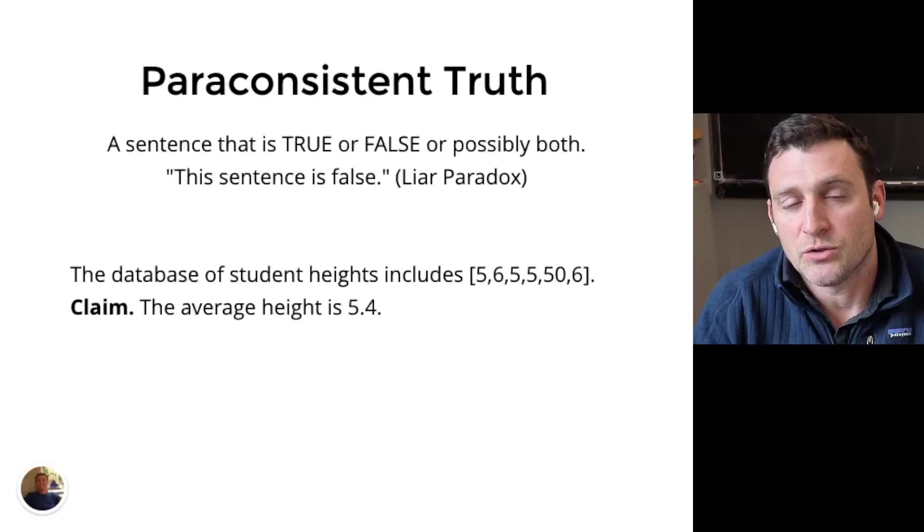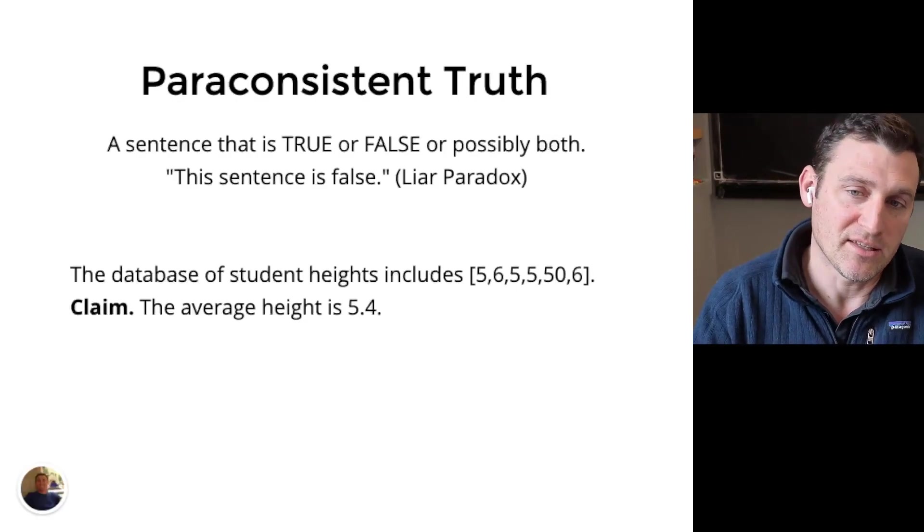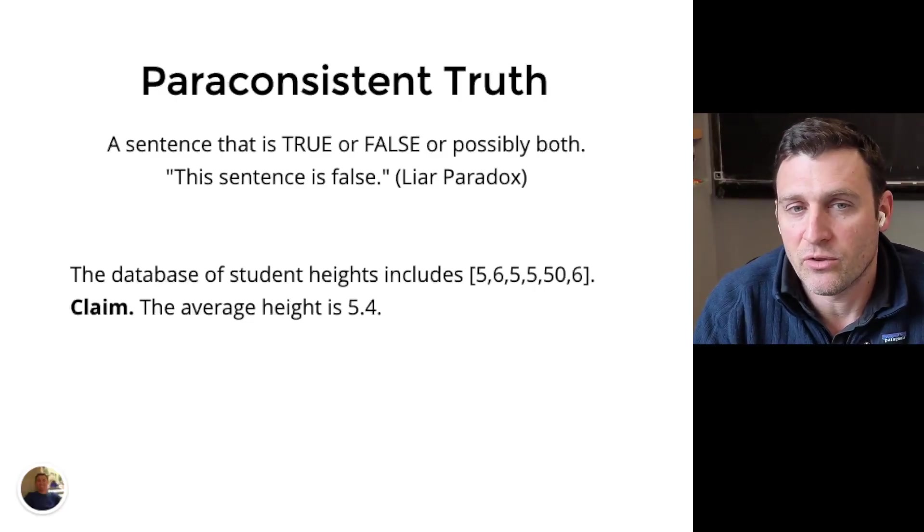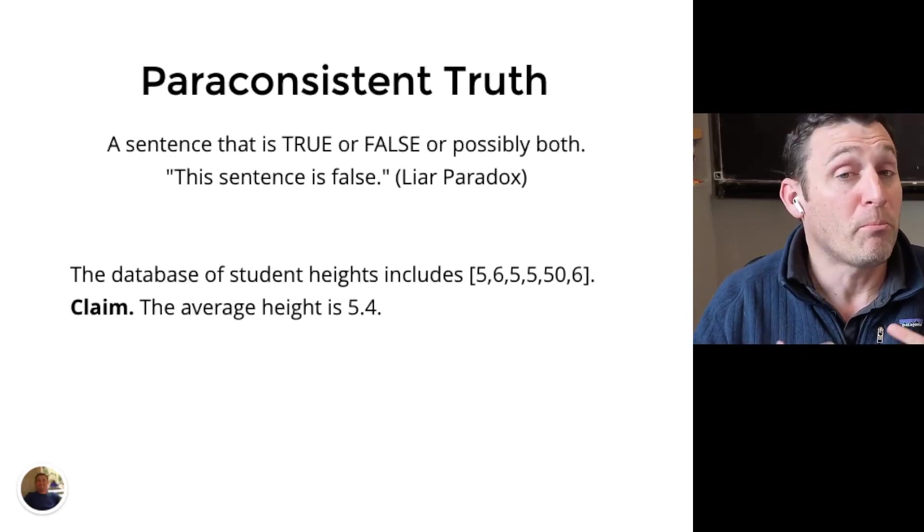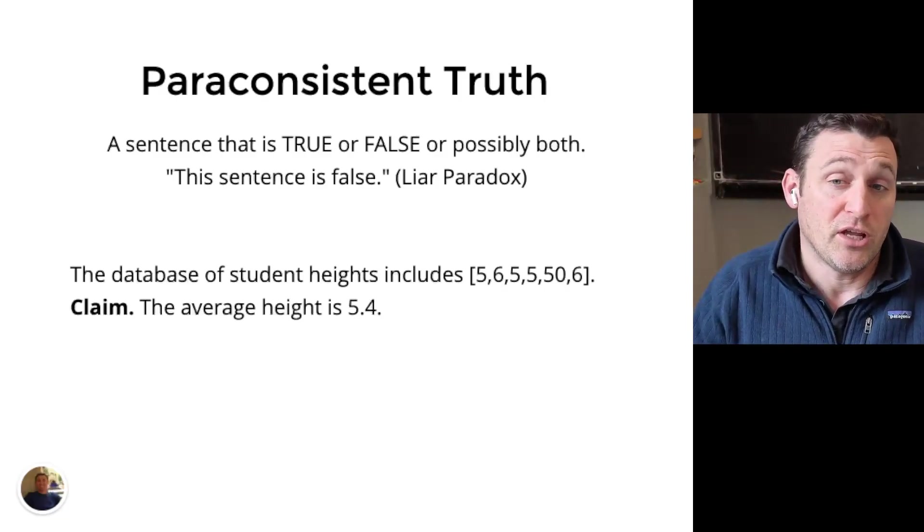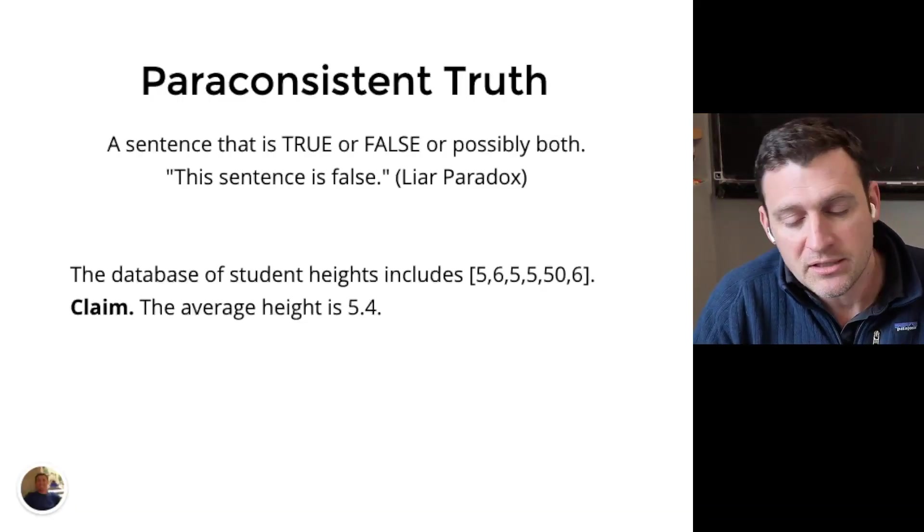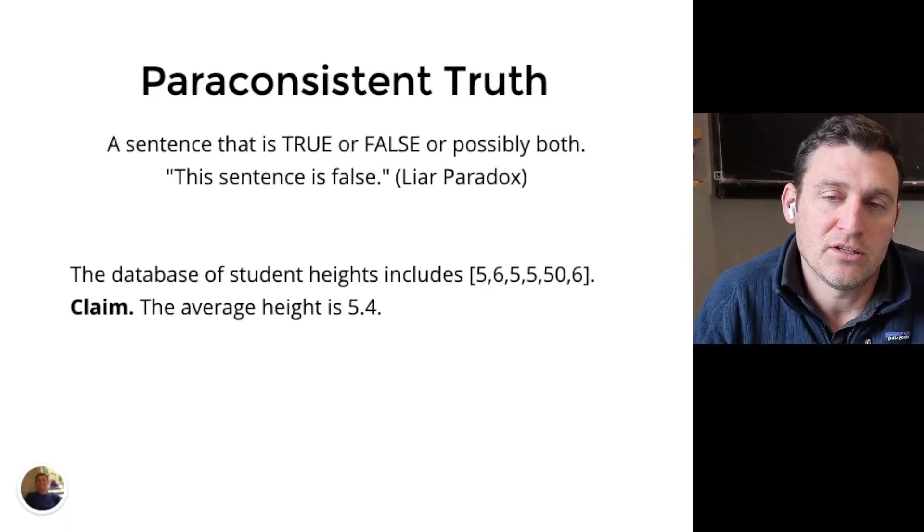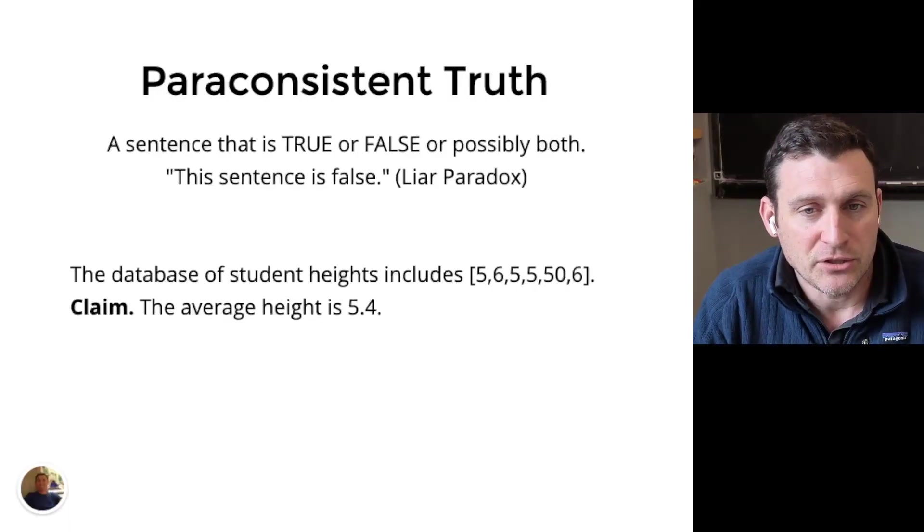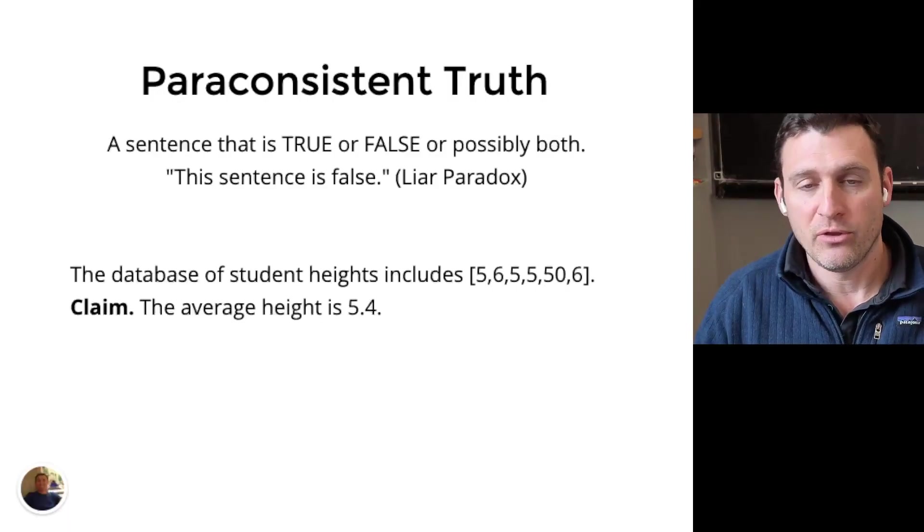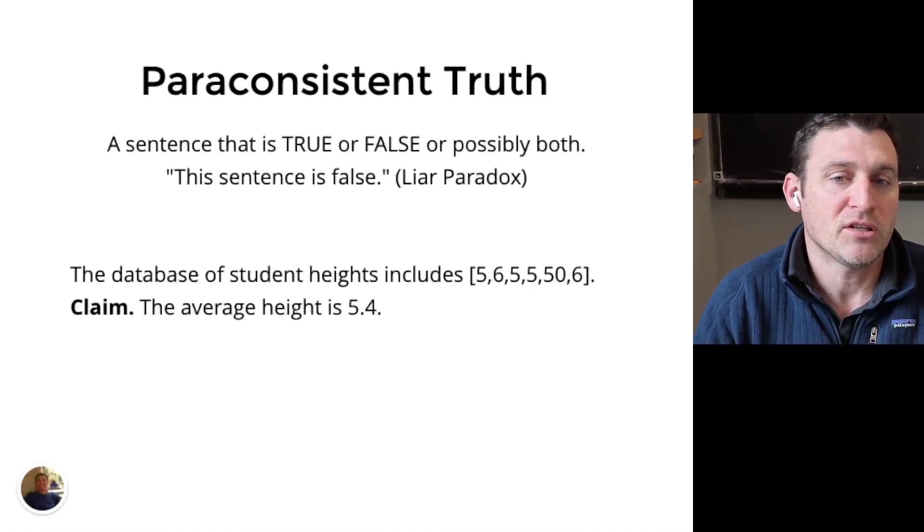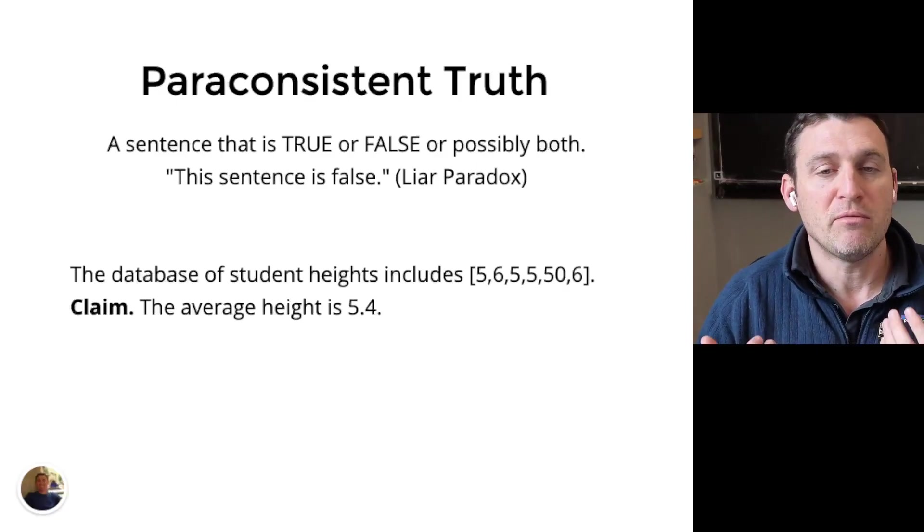But that's not the only situation that you'll need to worry about. There's also paraconsistent truth. This one's a very important upcoming type of logic because of data science applications. The point of a paraconsistent truth is that there are sentences that are true or false or possibly both. Now, you might feel like this can't be right. How can something be true and false? But there's a nuance here. Let's take a very simple example. This sentence is false. This is often known as the liar paradox. If the sentence is actually true, then it is also false. It's both.